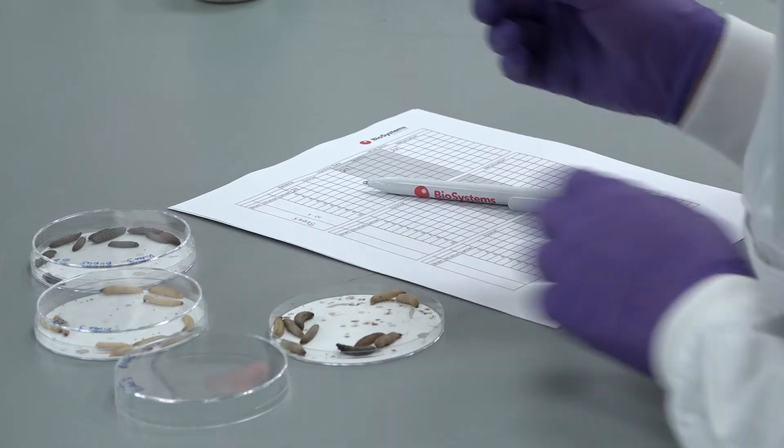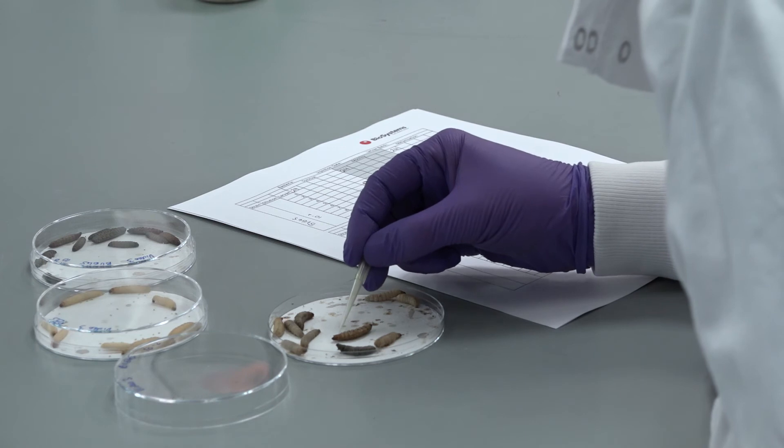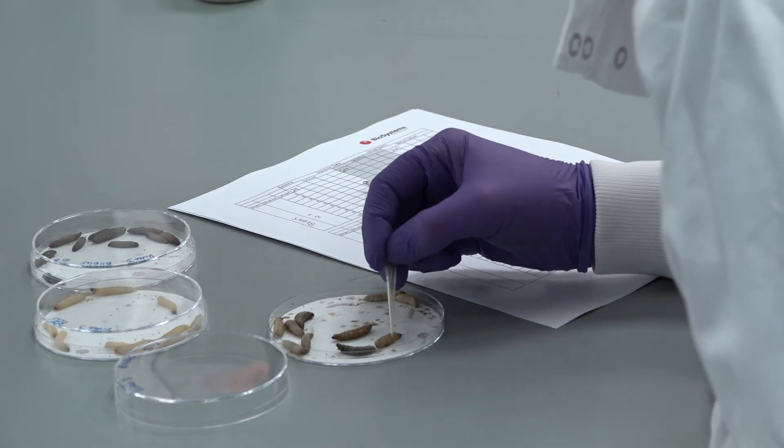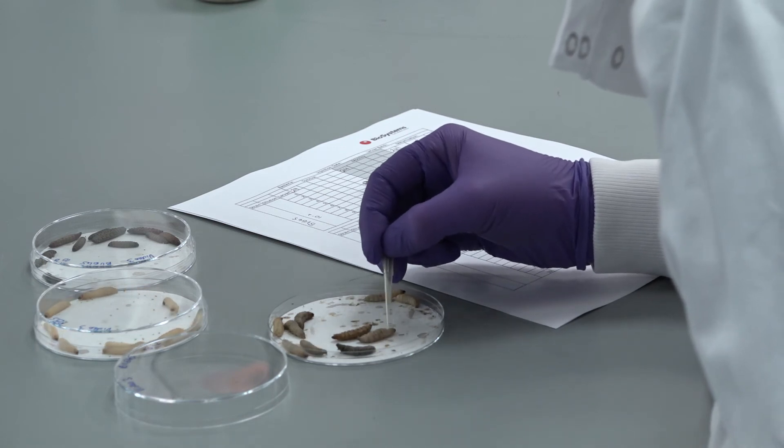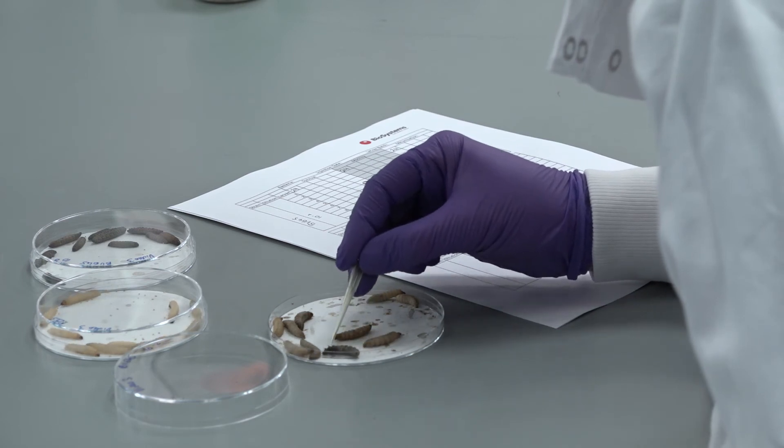When scoring larvae, melanisation, movement and death can be used as endpoints. Death is defined by no movement. We assess this by rolling the larvae and checking for movement.